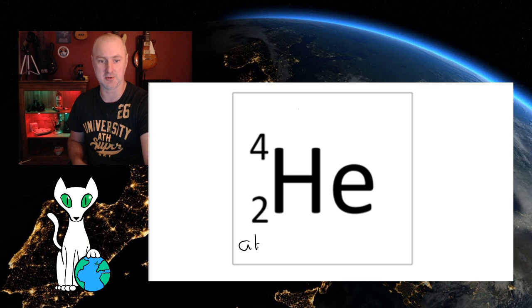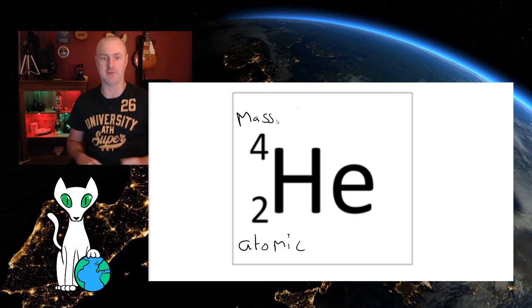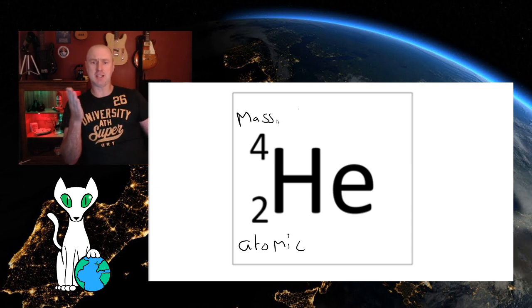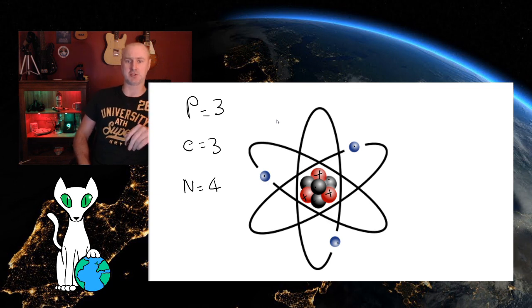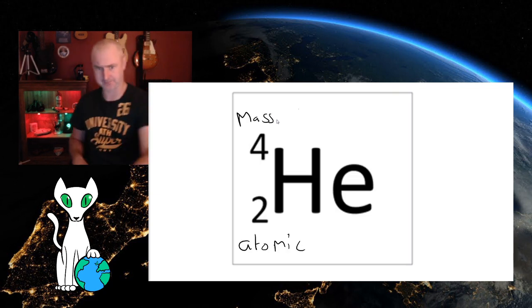So going back to an easier example, this is helium and we have an atomic number of two. We have a mass number of four. So how can I use those numbers to go back to here and figure out how many protons, neutrons and electrons we should have?